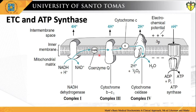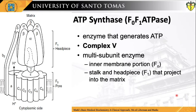This is another look at the electron transport chain with the four complexes. What is added here is a fifth complex, the ATP synthase, which can also be referred to as Complex V. ATP synthase, officially known as the FO-F1 ATPase, is the enzyme complex that generates ATP.